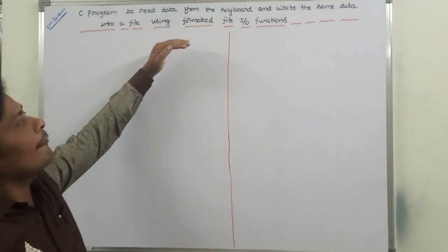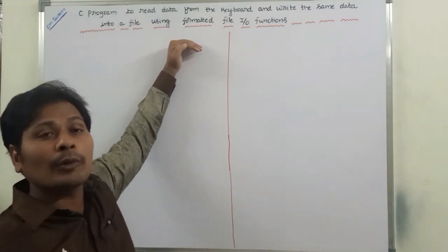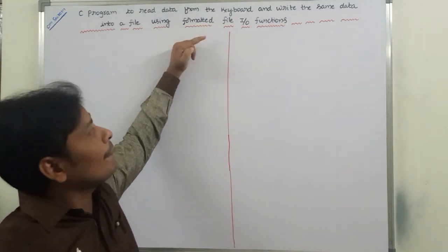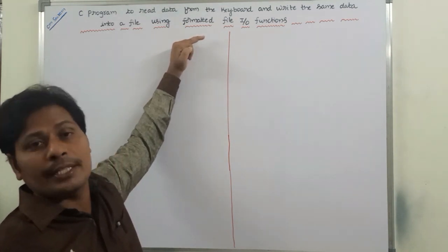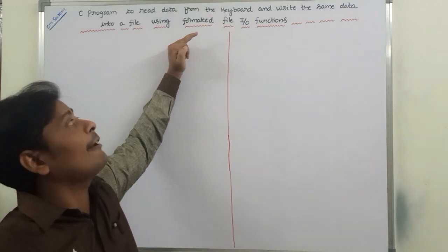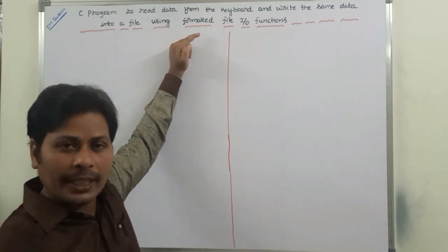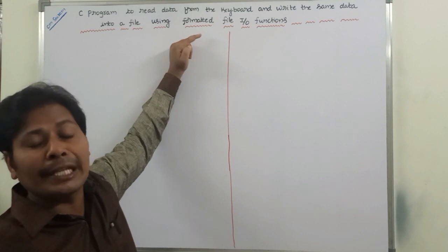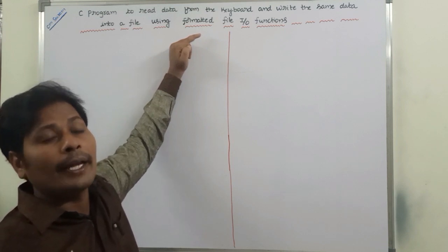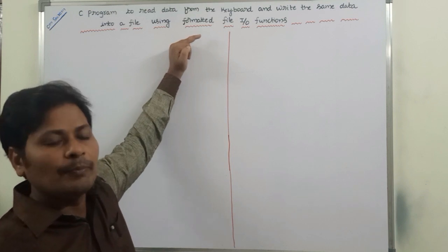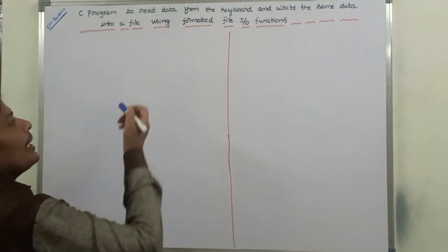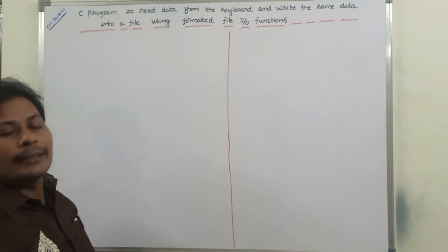Whenever we have to write the data into a file using a formatted file IO function, the function we are using is the fprintf function to write the data into a file. We have to write this program in this video.